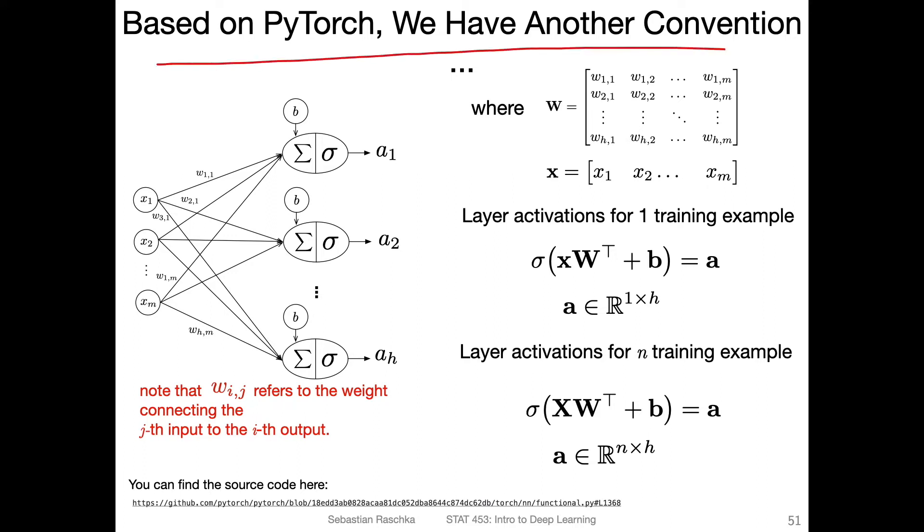Based on PyTorch, we have another convention here. Recall in the last video, I mentioned the convention where the transformation matrix or weight matrix is in front of x. In PyTorch it's after x. I think this makes sense, not from a geometry perspective, but from a data flow perspective, because this way we have to use fewer transposes.